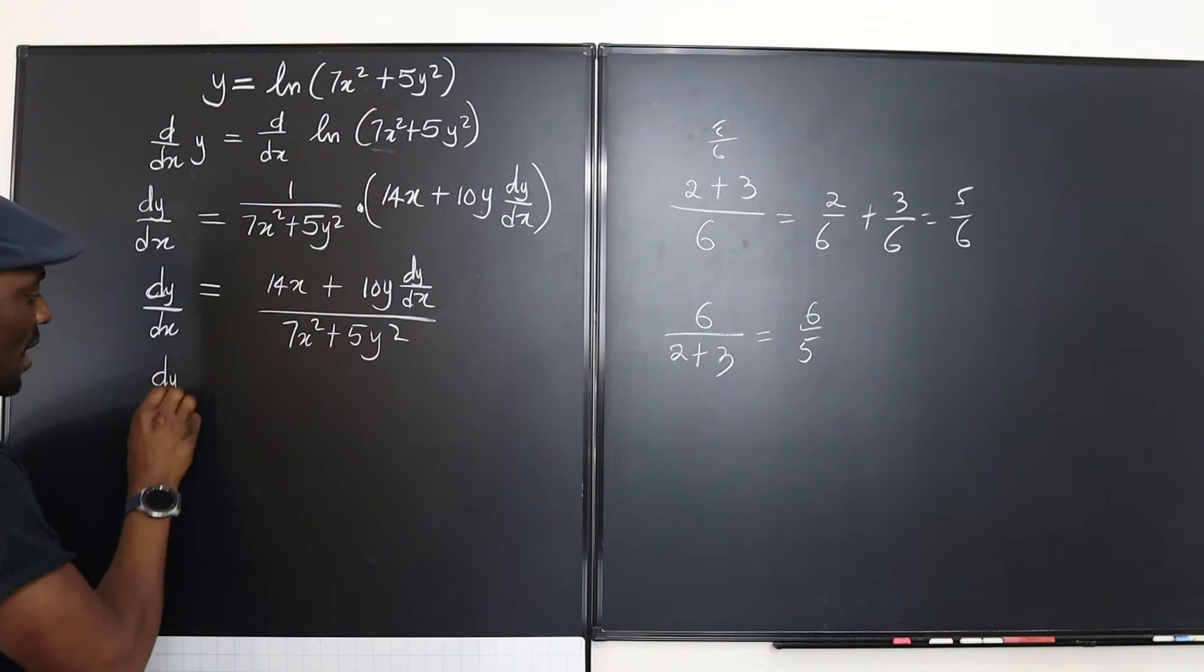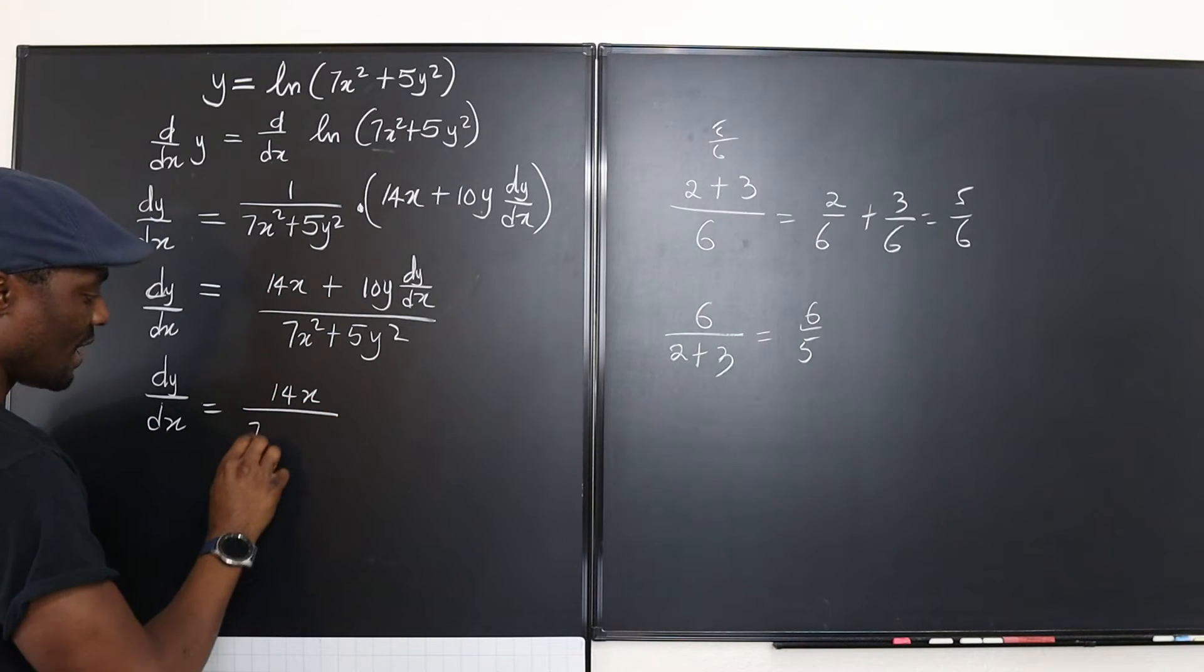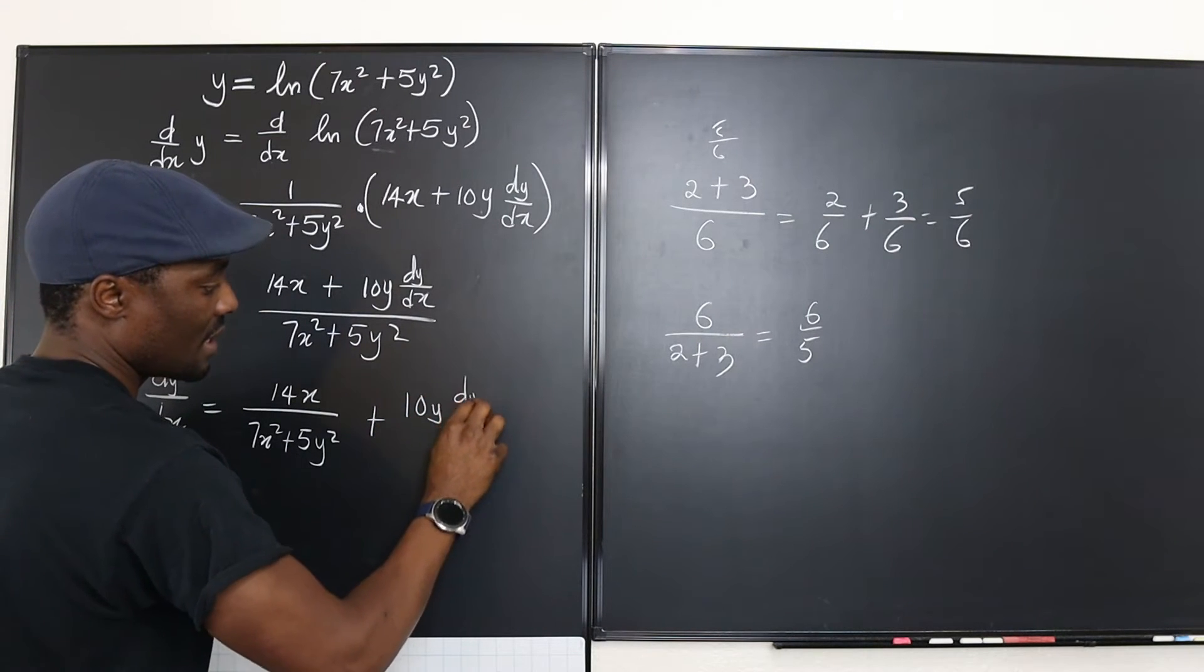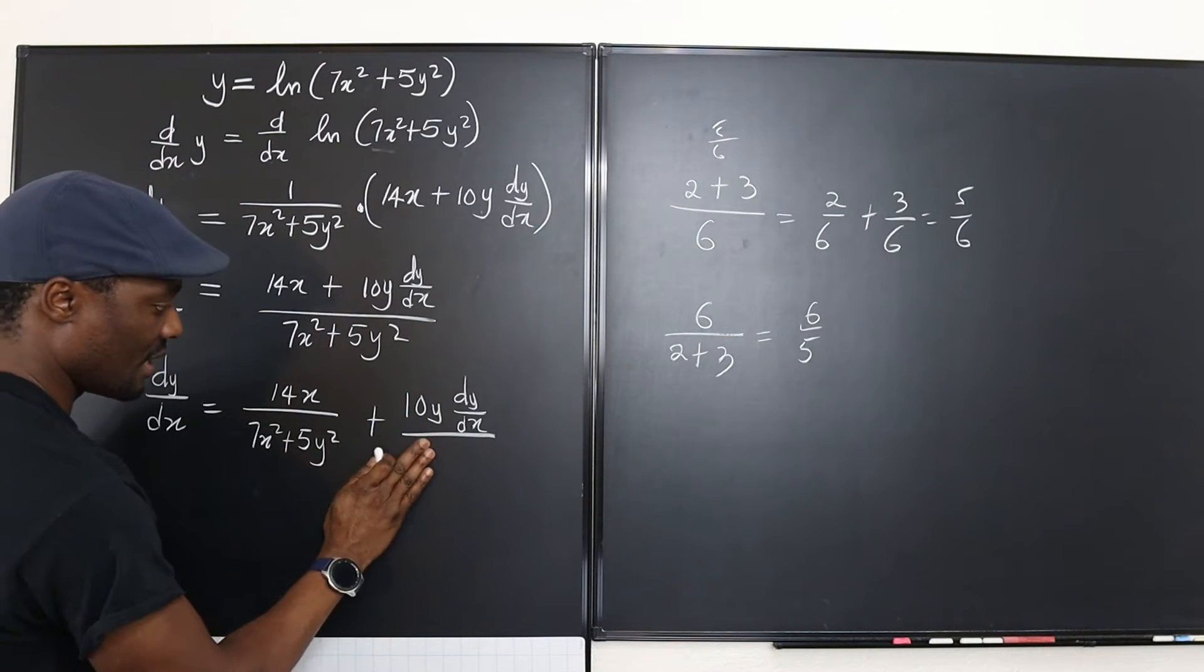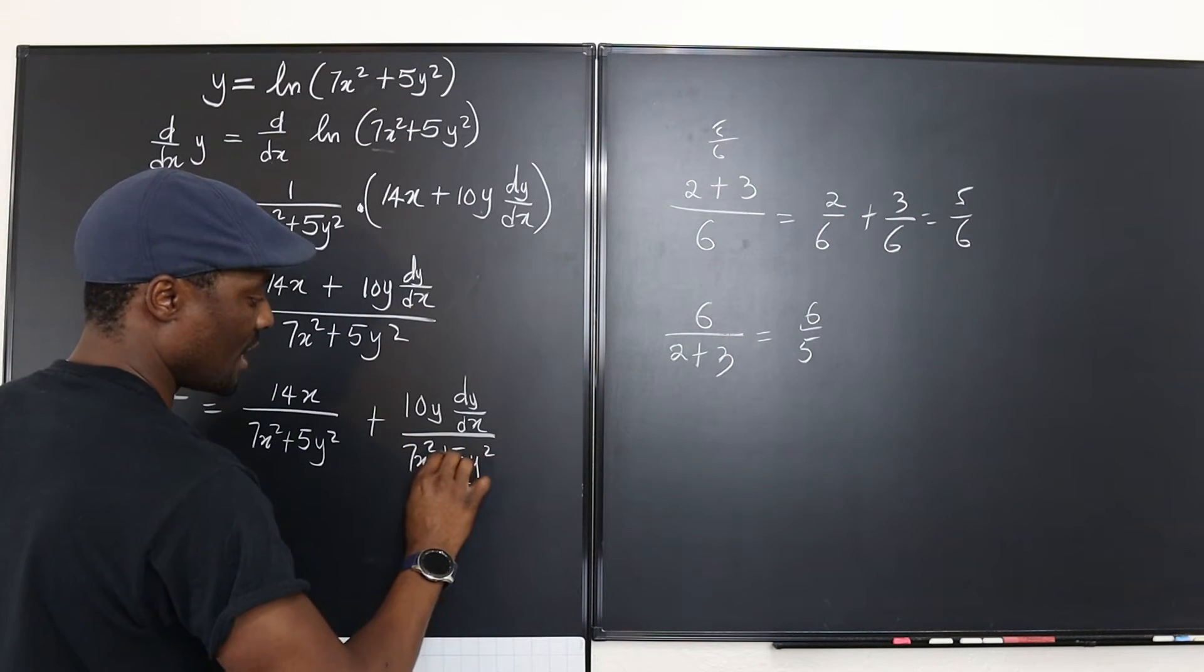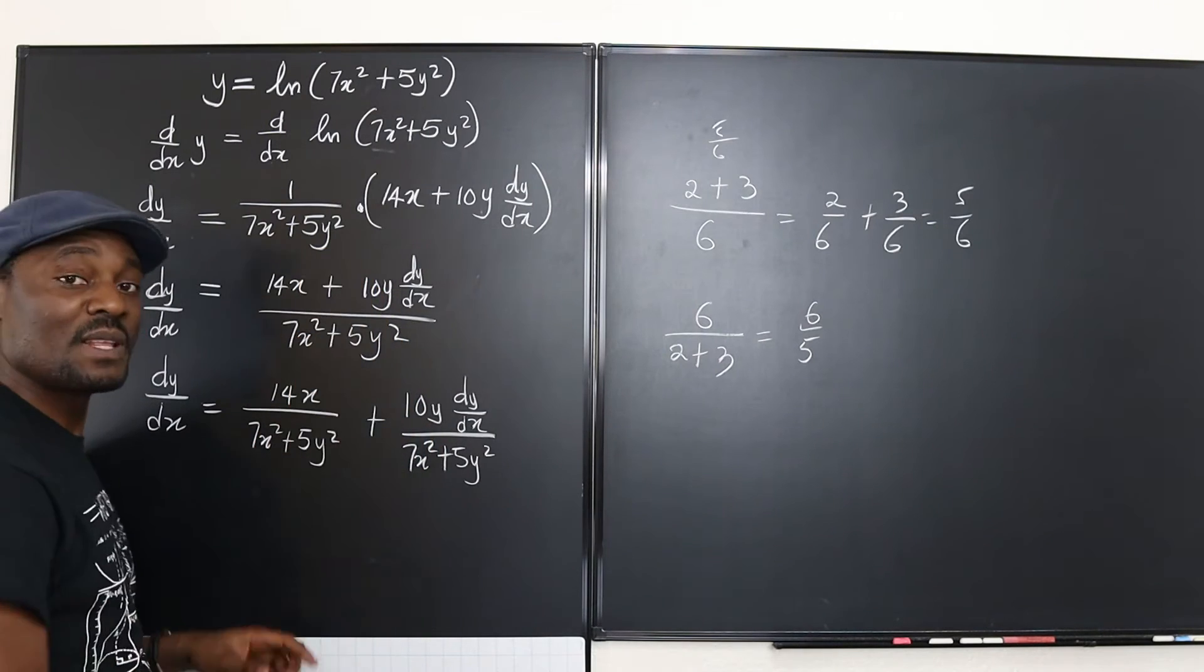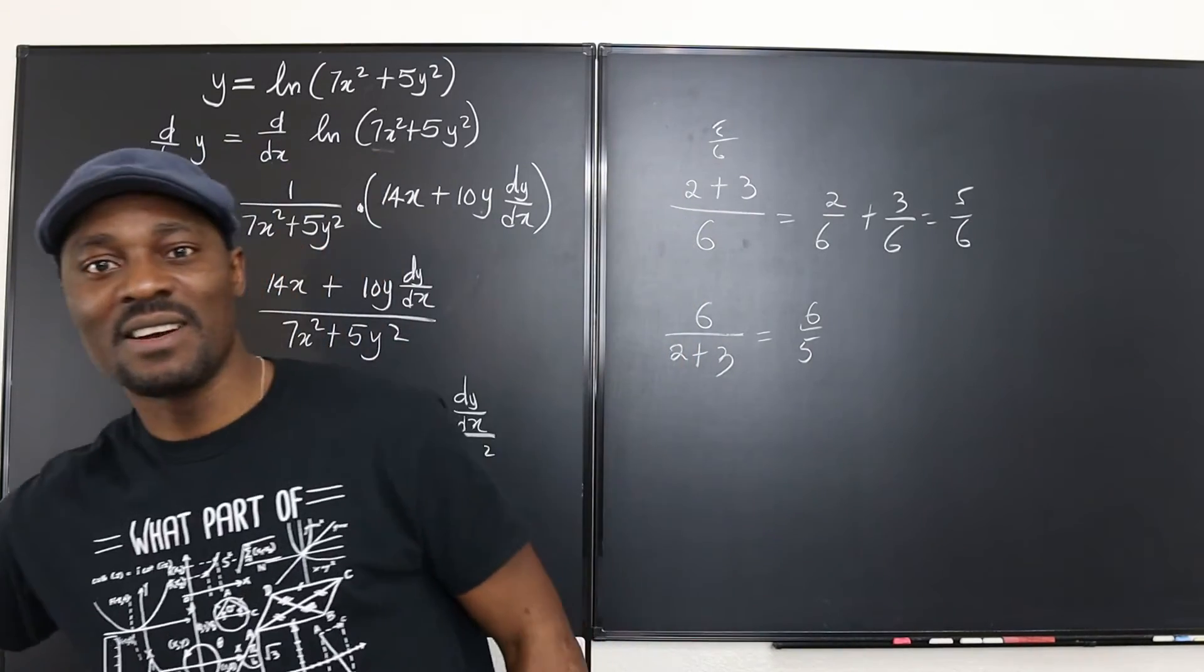So what you just want to do is just leave it. Your answer is 5 over 6. So that's the understanding you're going to use here and split this. So we're going to say that dy/dx is equal to this expression 14x over (7x² + 5y²) plus then this over this. That's going to be 10y dy/dx over (7x² + 5y²). As you can notice, I retained the same denominator just like I did here. You retain the same denominator. Don't split the denominator. You only split the numerator. And that's the only thing that's going to save us now and make the work a lot easier.